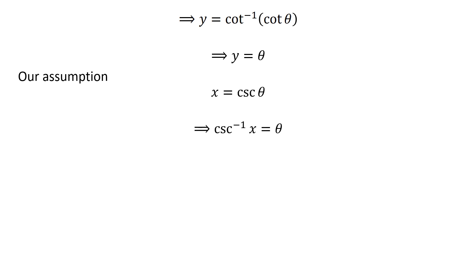As per our assumption, x is equal to cosecant of theta. Application of inverse function properties implies theta is equal to inverse of cosecant of x.